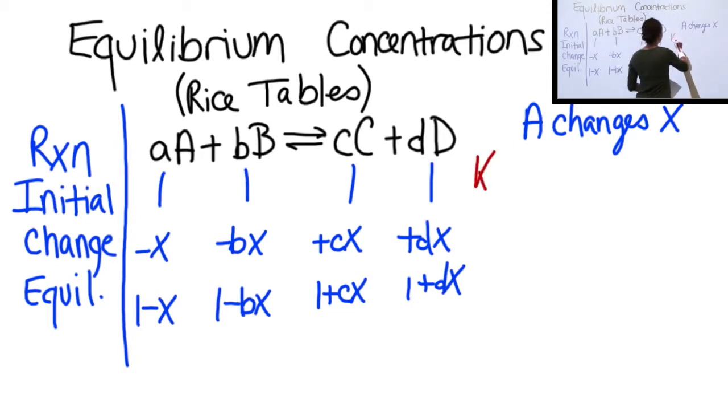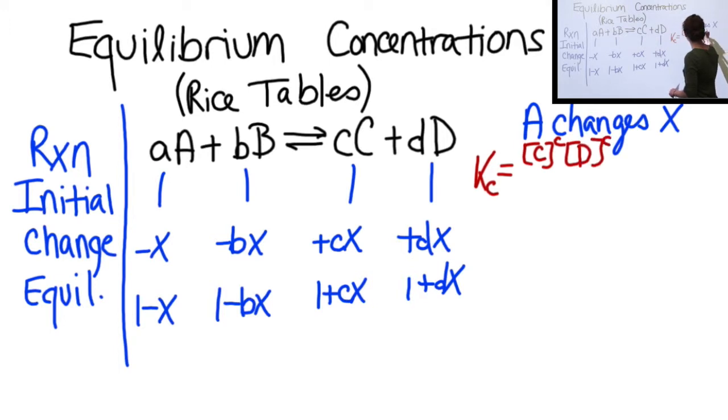So we'll write K sub C equals its products over reactants. So concentration C raised to its exponent, D to D.